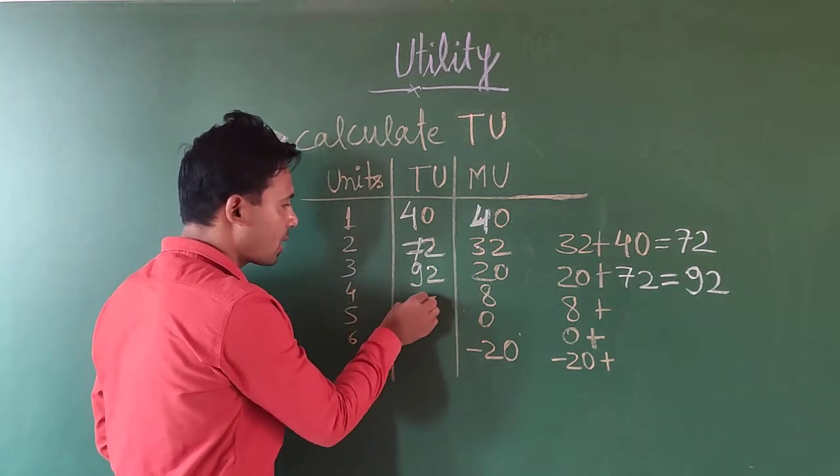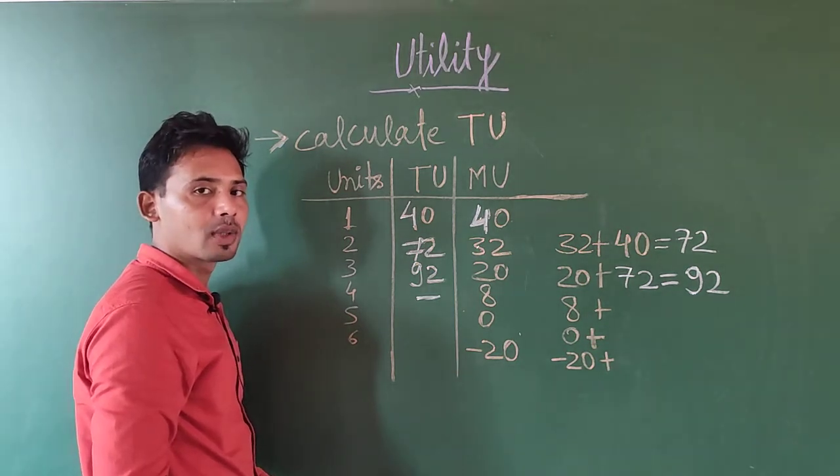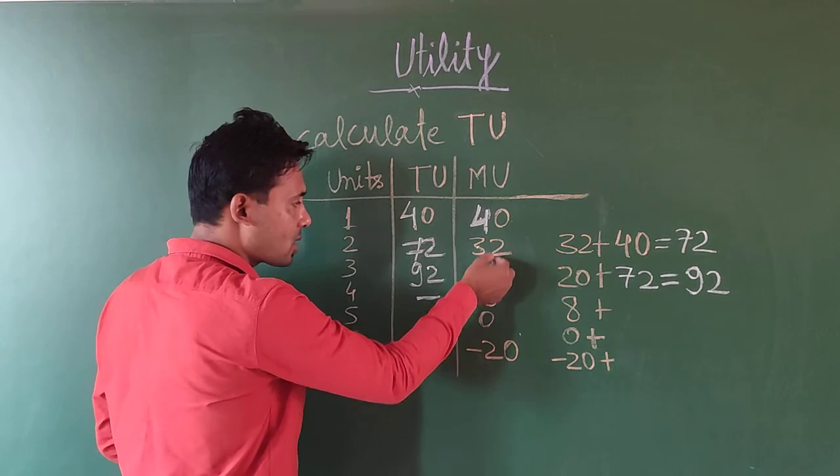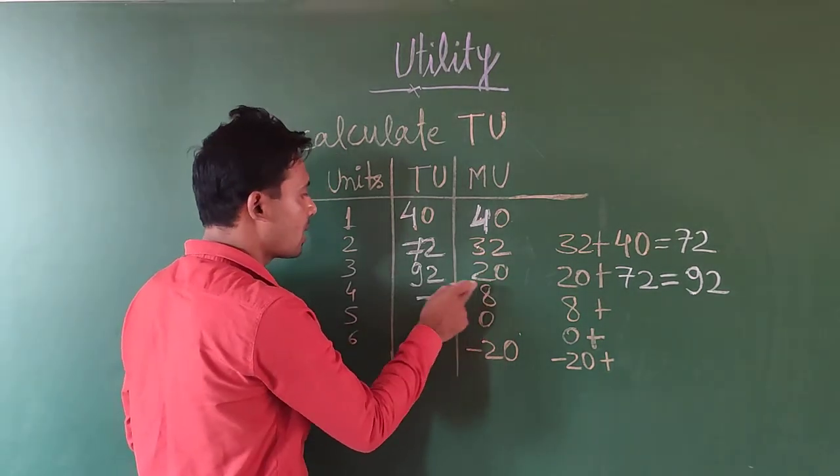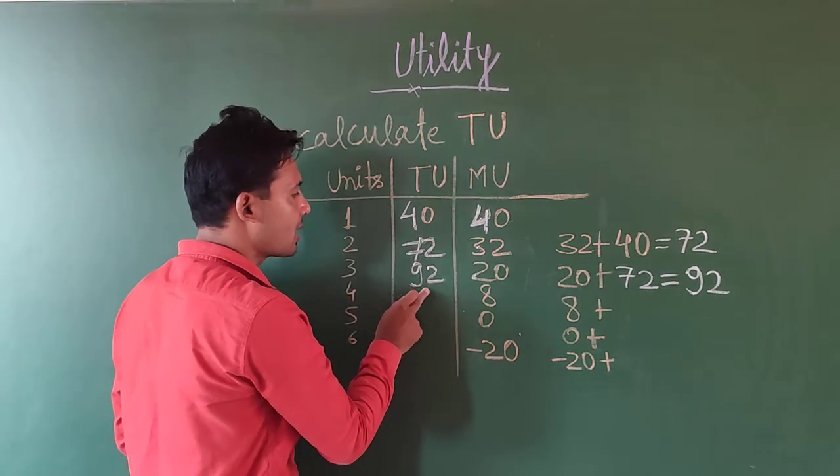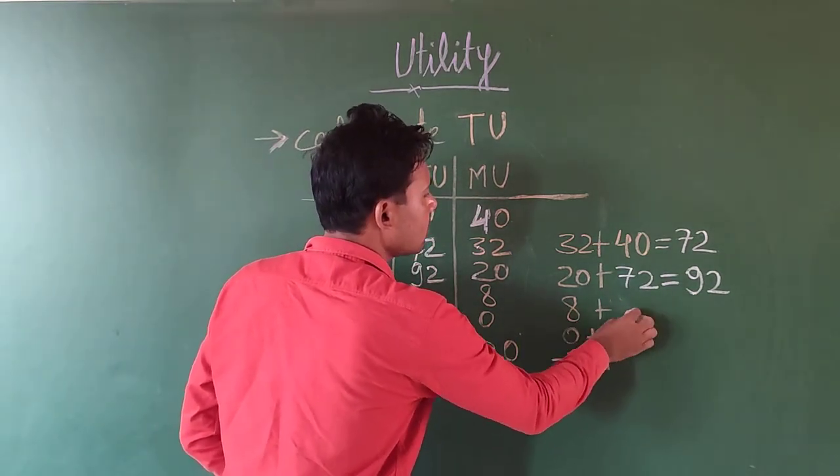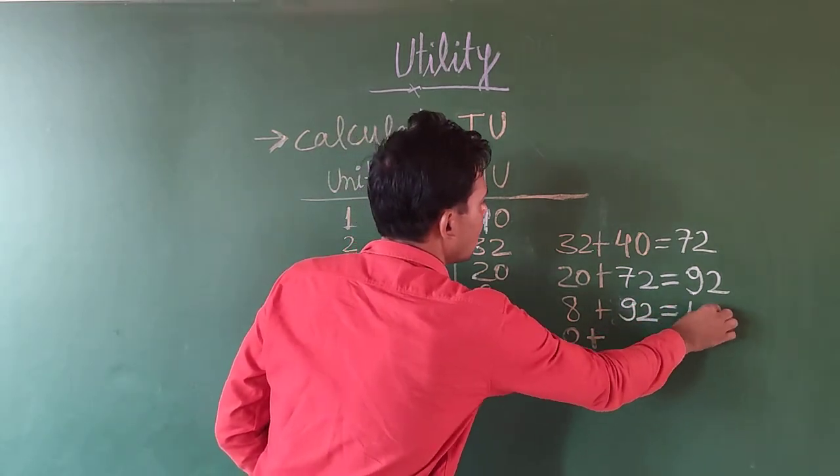Next number here. How do we do this? This number is already given here. 8 is given, so 8 plus 92 is equal to 100. So we have here 100.